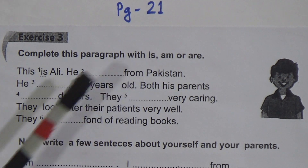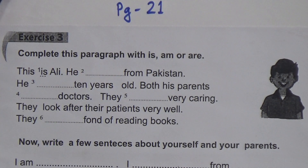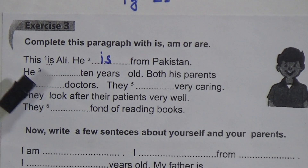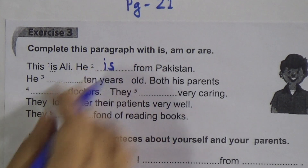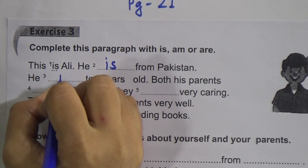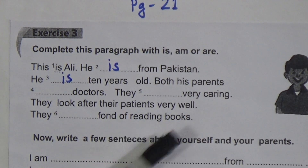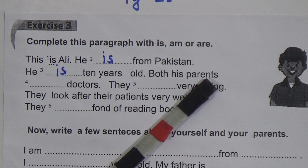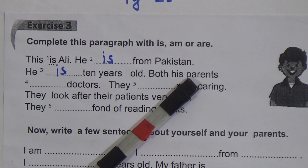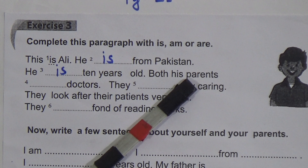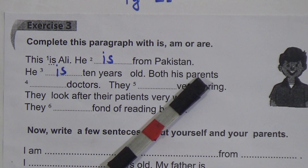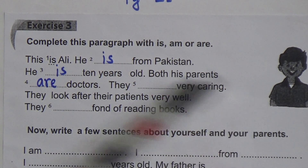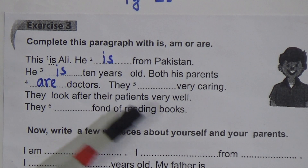From the chart, we use 'is' after 'he', so: He is from Pakistan. Number three: 'He ___ 10 years old' — just like number two, after 'he' we write 'is': He is 10 years old. Number four: 'Both his parents ___ doctors' — 'parents' means father and mother, which is a plural subject — more than one person — so we write 'are': Both his parents are doctors.